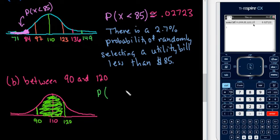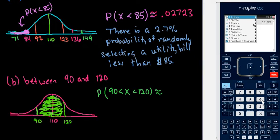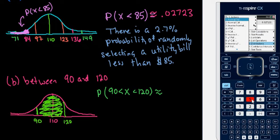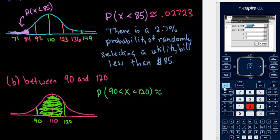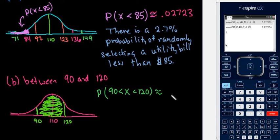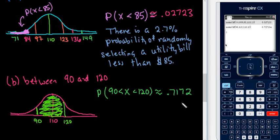We use the notation P(90 < X < 120). In the calculator, we go to Menu → Statistics (option 6) → Distributions (option 5) → option 2. This time our lower bound is 90 and our upper bound is 120. The mean is still 110 and the standard deviation is 13. Plugging this in, we get approximately 0.717, so there's approximately a 71.72% chance of getting a utility bill between $90 and $120. This is very likely to happen.